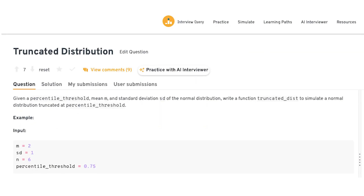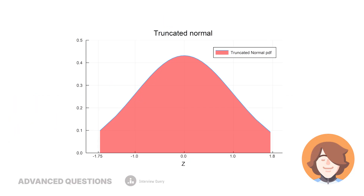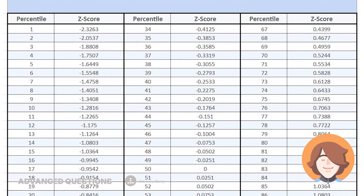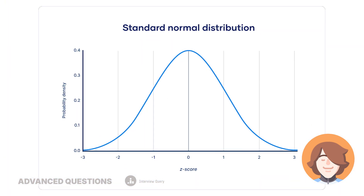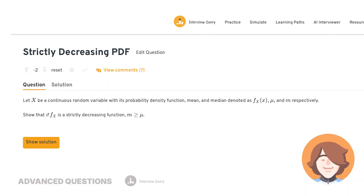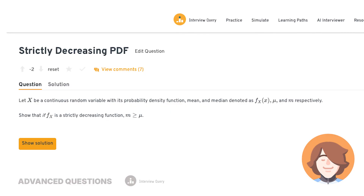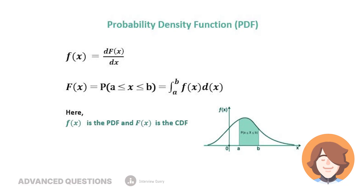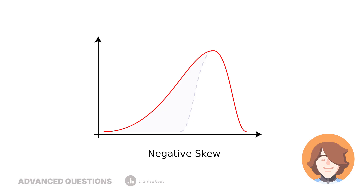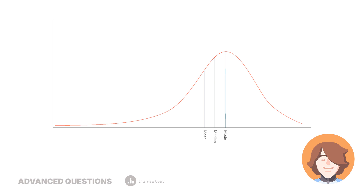Another example of a question would be: how would you simulate a truncated normal distribution? To simulate a truncated normal distribution, we generate values from a normal distribution but only keep those that fall below a certain percentile, say the 75th percentile. We start with a normal distribution defined by mean and standard deviation. A third question: how would you prove that the median is greater than or equal to the mean for a strictly decreasing distribution? When a probability density function is strictly decreasing, values are more concentrated on the left — higher probability for smaller values — and as a result the distribution is skewed to the right. The mean, which is sensitive to extreme values, gets pulled by the long tail, while the median stays more central. That's why in a strictly decreasing distribution the median ends up greater than or equal to the mean.